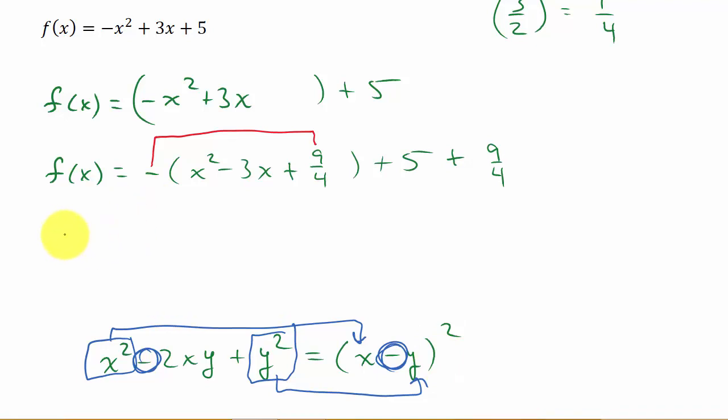So we've got f(x) equals, there's our negative sign, and then remember, that's going to factor into this. So the square root of this term is x, this sign, and then the square root of 9/4 is 3/2.